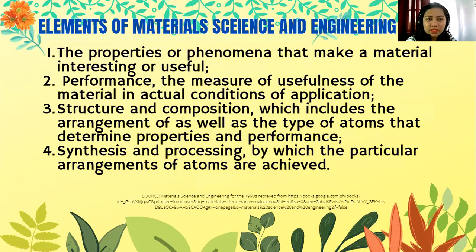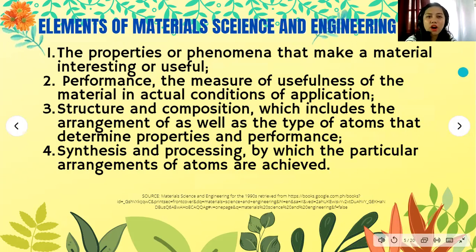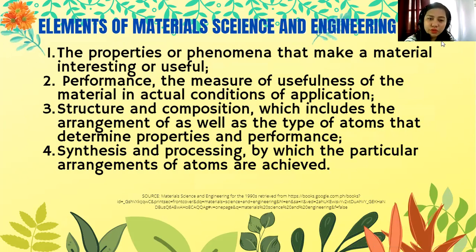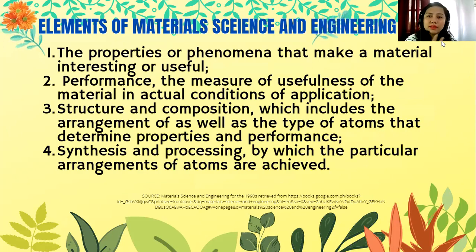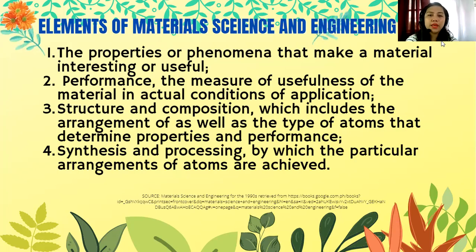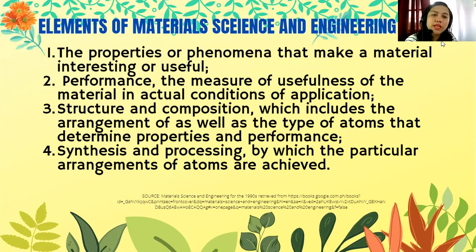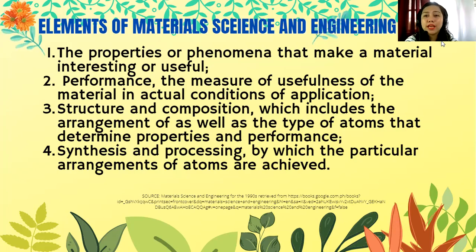We have elements of material science and engineering. First is the properties — the phenomena that make a material interesting or useful. Is your material really useful? Second, consider the performance — the measure of usefulness of the material in actual conditions of application. Third is the structure and composition, which includes the arrangements and types of atoms that determine properties and performance.